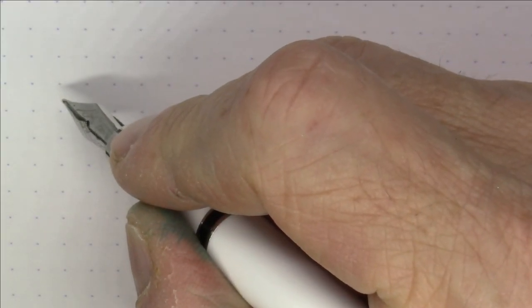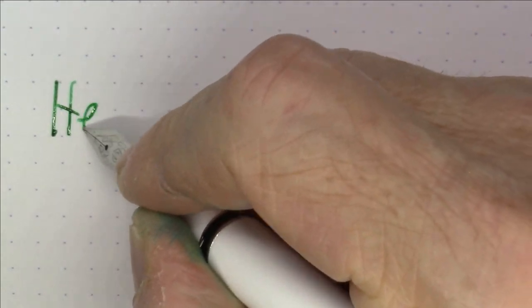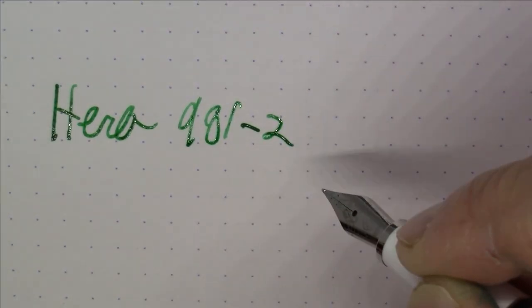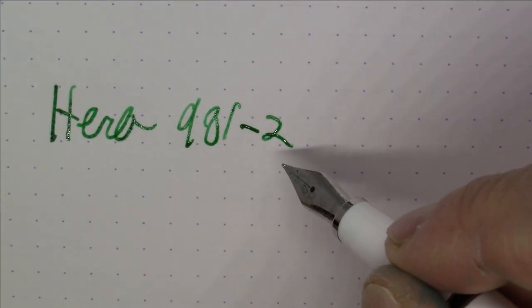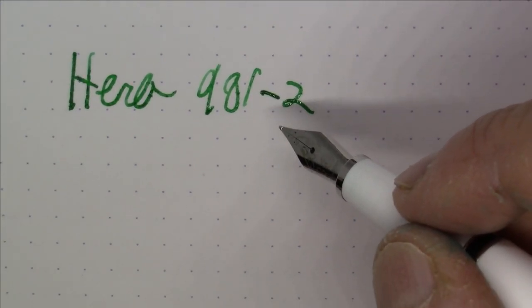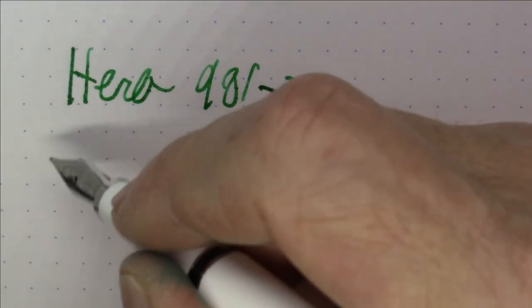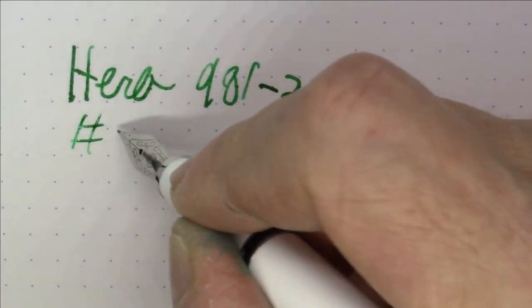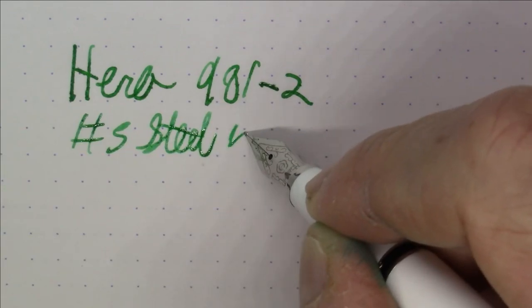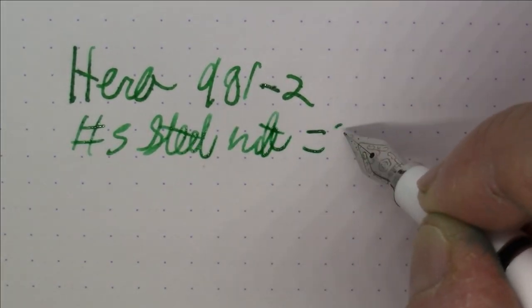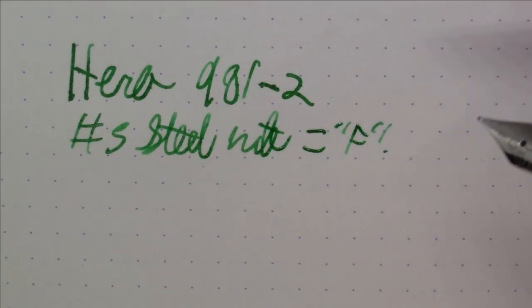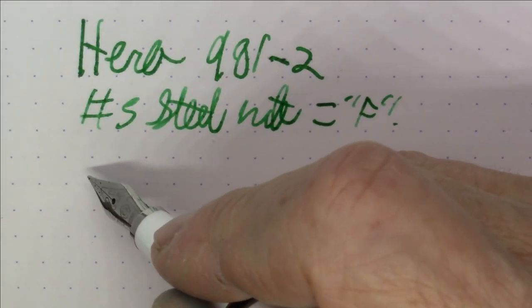All right folks, what we're writing with here today is a Hero 981-2. The dash two is important. I believe there's a 981-1, which is a metal body pen. The 981-2 has a number five steel nib, and this is in fine, although the nib is not labeled.